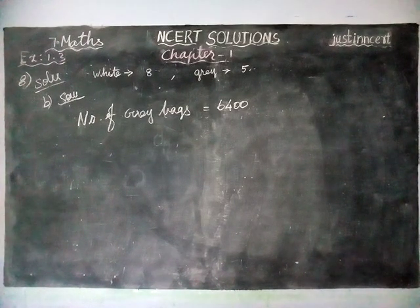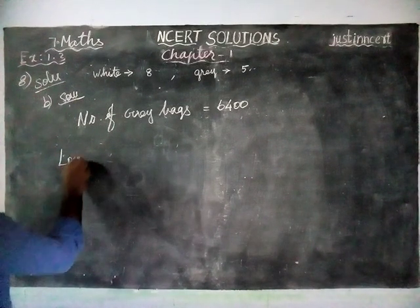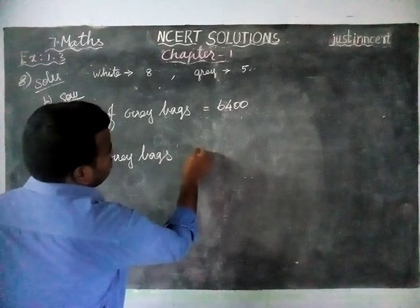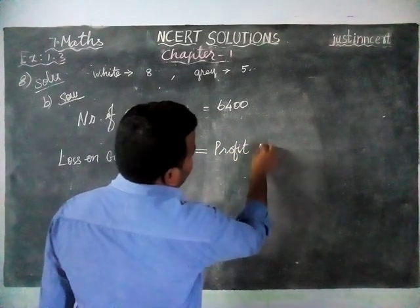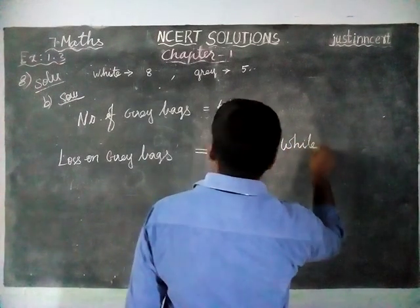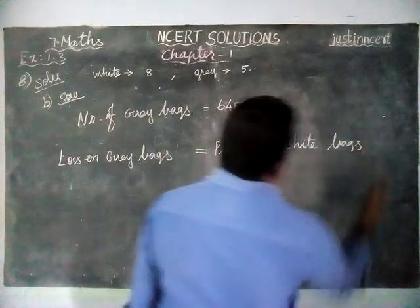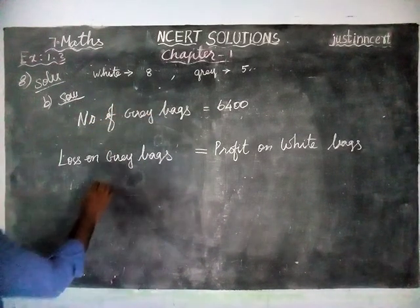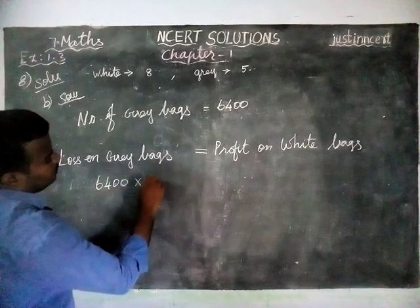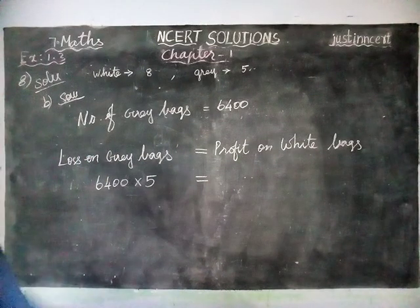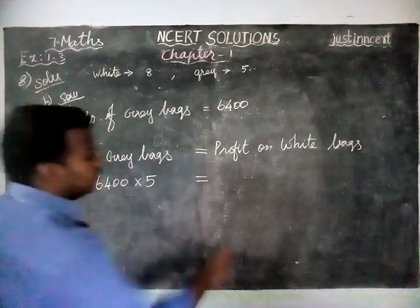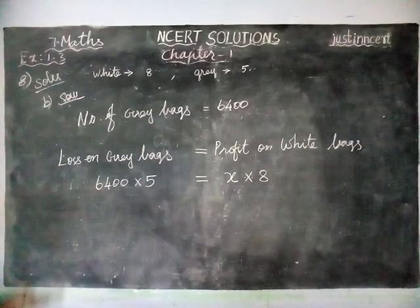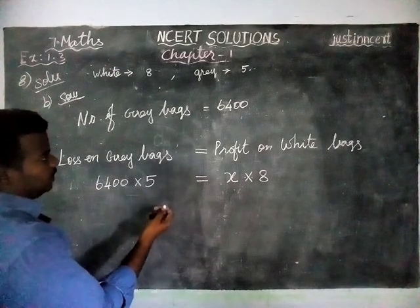We set up the equation: loss on gray bags must equal profit on white bags. Number of gray bags is 6400, and the loss per bag is 5 rupees. So 6400 into 5 equals profit on white bags. We don't know the number of white bags, so we take that as x. So 6400 × 5 = x × 8 rupees. We need to find x, the total number of white bags.